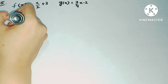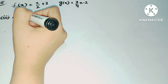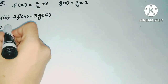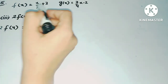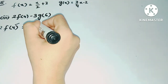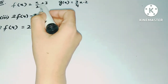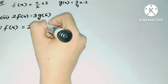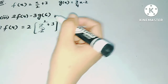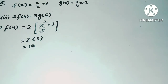Moving to Part 3: 2f(4) - 3g(6). First find 2f(4), meaning multiply 2 by the f(x) function with x substituted as 4. So: 2 × (4/2 + 3) = 2 × (2 + 3) = 2 × 5 = 10. So 2f(4) = 10.